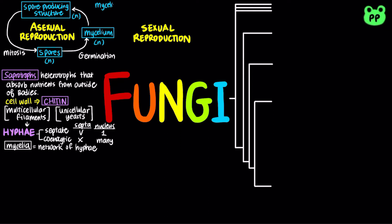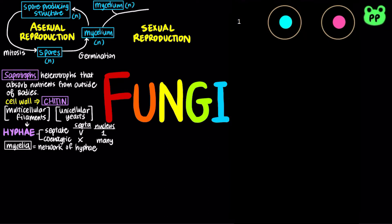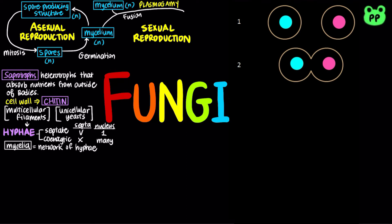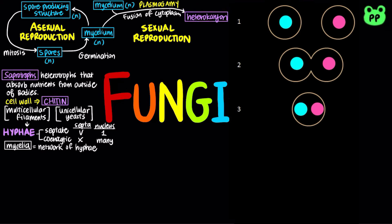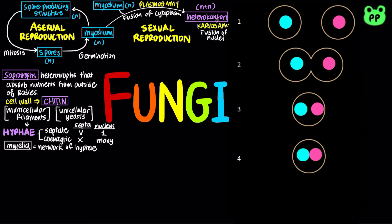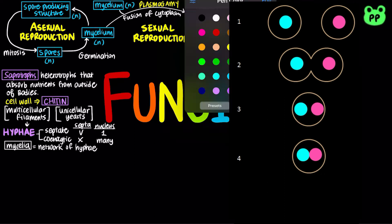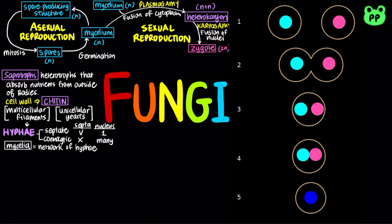During sexual reproduction for multicellular fungi, two parent mycelia fuse their cytoplasm in a process known as plasmogamy. However, the haploid nuclei from each parent do not fuse right away; they coexist in a structure known as a heterokaryon. Later on, during karyogamy, the haploid nuclei fuse, producing a diploid zygote, which quickly undergoes meiosis to produce haploid spores, which then germinate into multicellular mycelium.